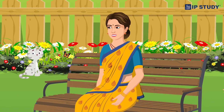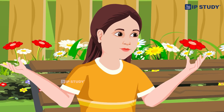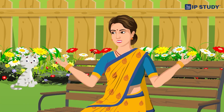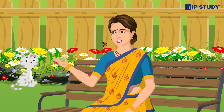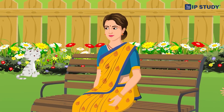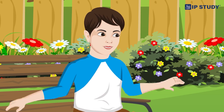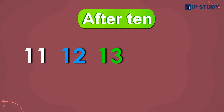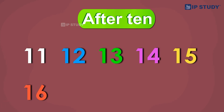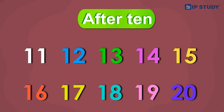Mom, we have learned about making ten — what comes after ten? Great question, Urvashi! After ten we start counting with new number names. Can you teach us, mom? Of course! After ten we have 11, 12, 13, 14, 15, 16, 17, 18, 19, and 20.